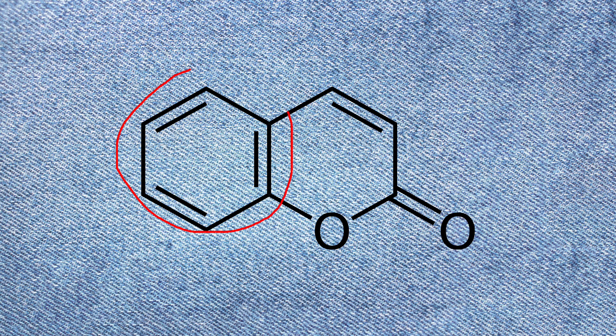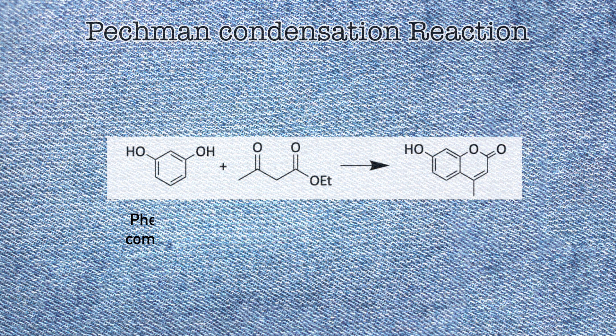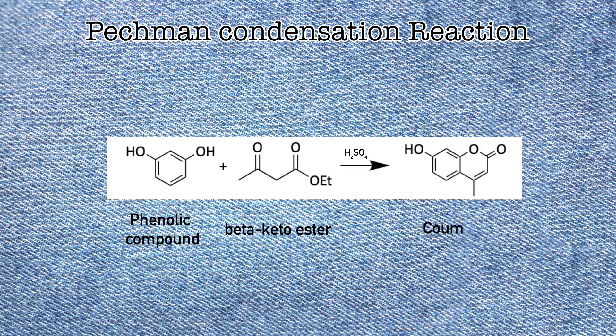Coumarins are phenolic substances composed of fused benzene and alpha-pyrone ring. The procedure that we follow for the synthesis of coumarins is called Pechmann condensation, where there is an interaction of a phenol with a beta-keto ester in the presence of an acid condensing agent.